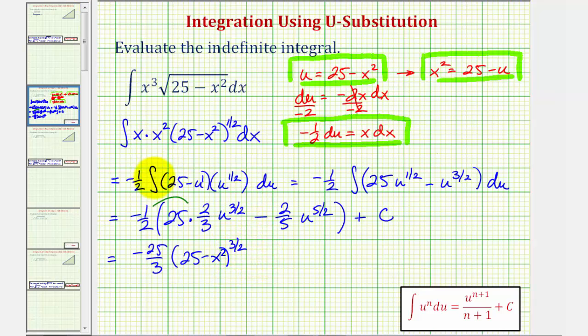Now for the next product, notice how we have a negative times a negative, that's going to be positive or plus. Once again, notice how the two simplify out, so we have one-fifth times u to the five-halves. But again, u is 25 minus x squared, so this quantity is raised to the five-halves power, and then we have plus C.